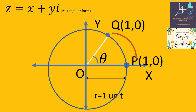Point P can be written as a complex number z, which is equal to r times e raised to i times theta. That is the polar representation of the complex number, because any complex number z = x + iota·y — the rectangular form — can be represented in polar form as z = r·e^(iθ).